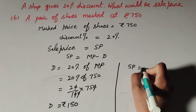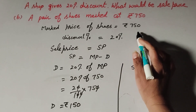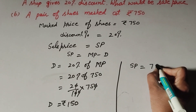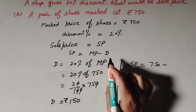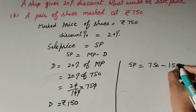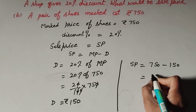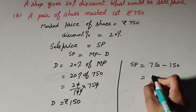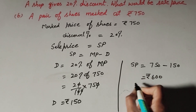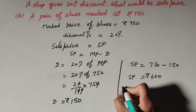Now we find the sale price. SP equals marked price minus discount. Marked price is 750, minus discount of 150, so 750 minus 150 equals 600. The selling price of the shoes equals rupees 600.